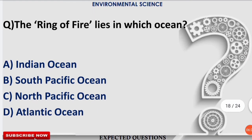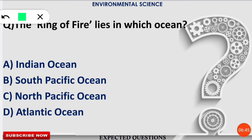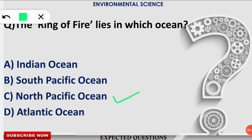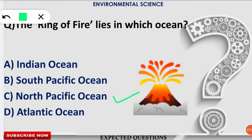The next question is: the Ring of Fire lies in which ocean? Most of you will know it lies in the Pacific Ocean, but you should know whether it is north or south. The correct answer is option C. The Ring of Fire, also known as the Rim of Fire or Circum-Pacific Belt, is situated in the North Pacific Ocean. It is called the Ring of Fire because it constitutes several volcanoes, which are also a major reason for earthquakes.